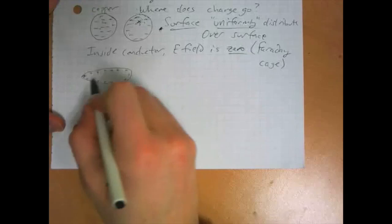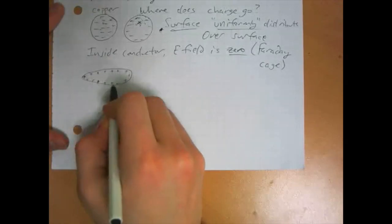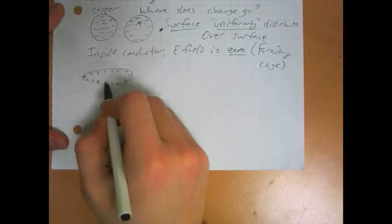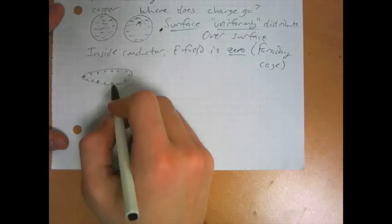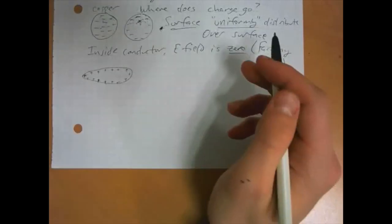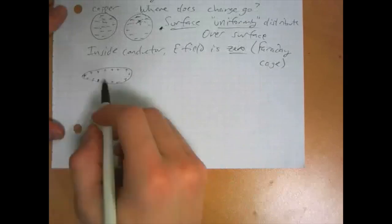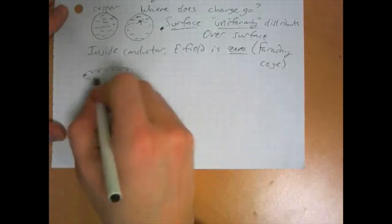They arrange themselves so that there is no horizontal component of the force on them. And because of that arrangement, that means that at any given point, the components of the electric field parallel to the surface all cancel out. Because if there was a component of the electric field parallel to the surface, then this charge would tend to move, and the charge wouldn't be distributed the way it is.